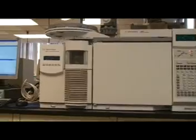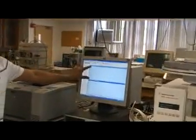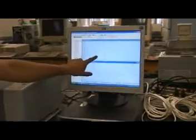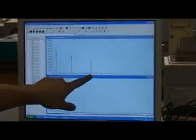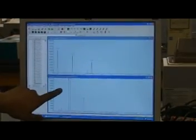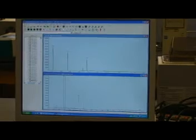So once we run our sample, we got our result on the computer screen. The stock part is the GC part which indicates the separation of various components in our sample. So once we analyze this peak, we got this kind of spectra and we match this spectra with the spectra in the library for the identification of the component.